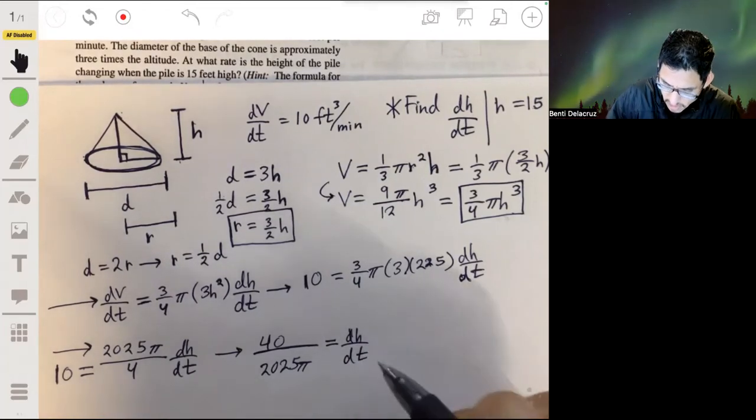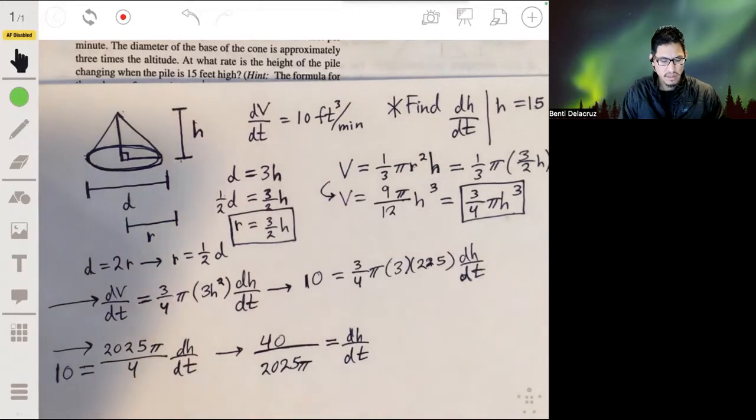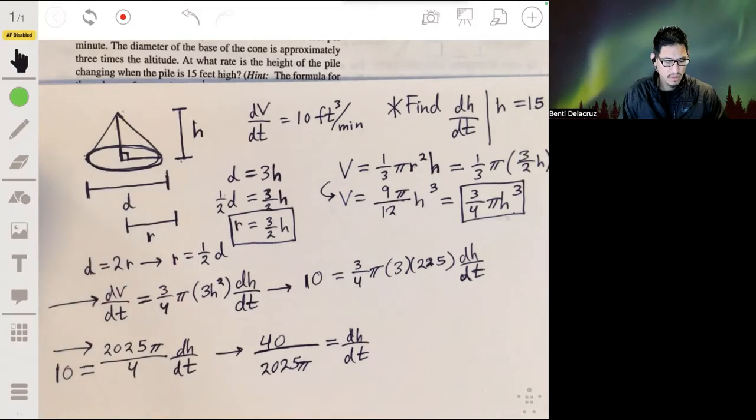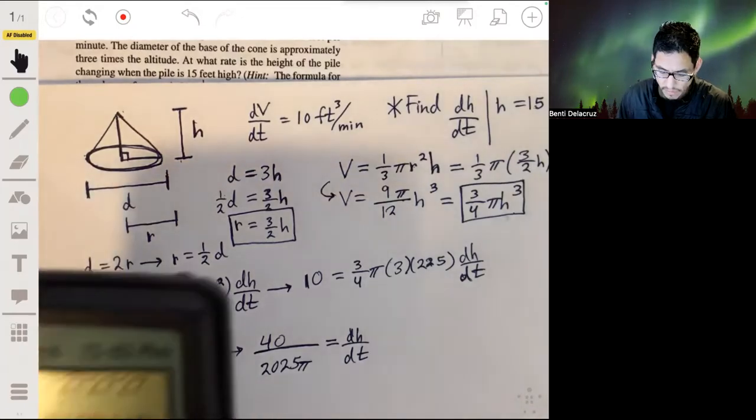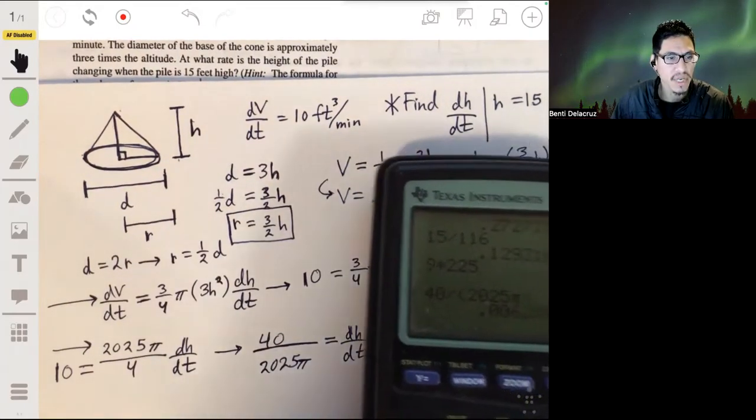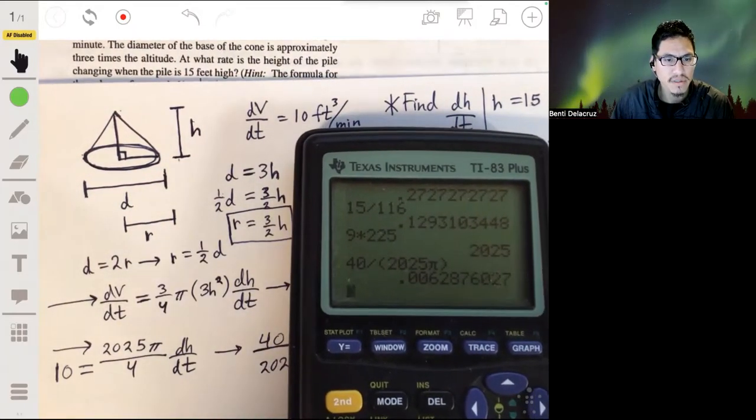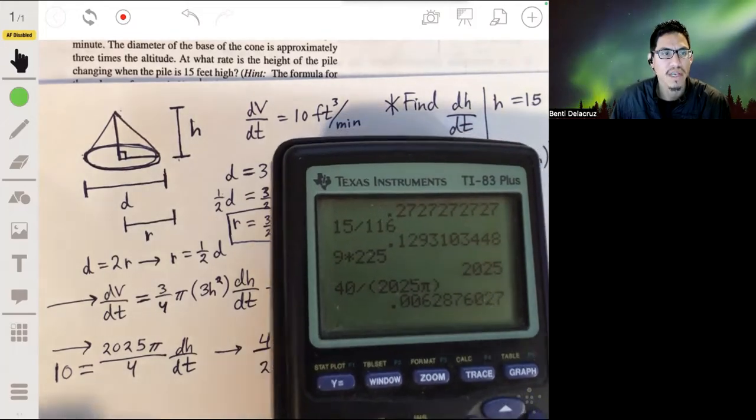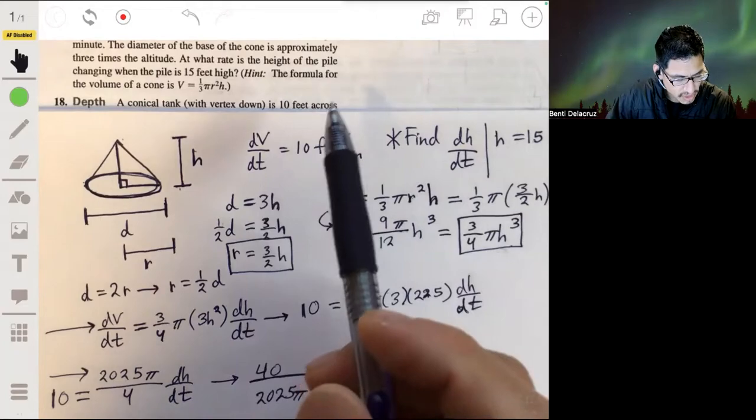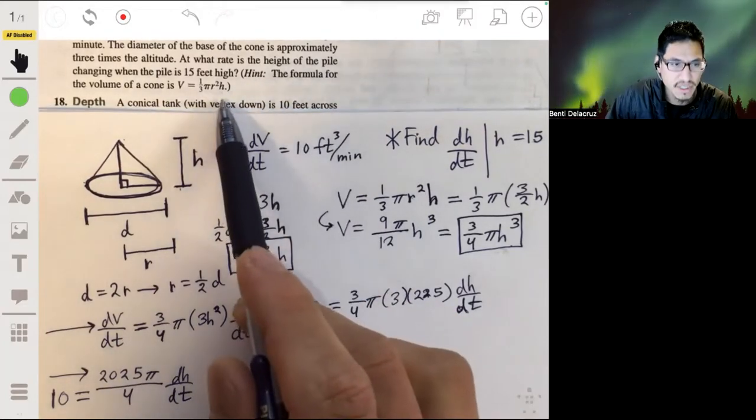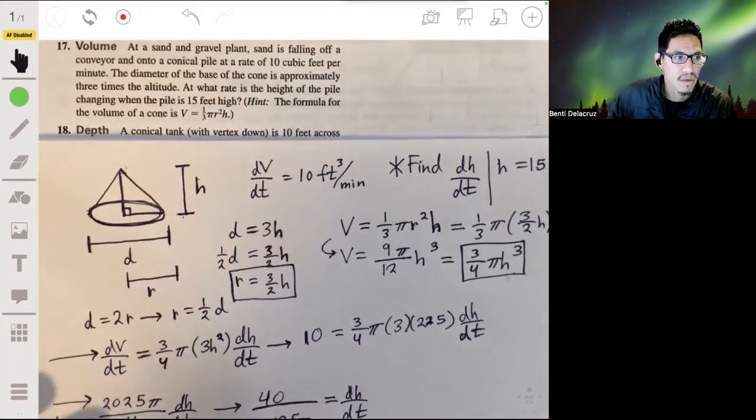40 over 2025 will be dh/dt, and now let's just go ahead and approximate this. And we'll get that dh/dt is about 0.0062876027, and we're going to have this in terms of feet per minute since height is a one-dimensional measurement.